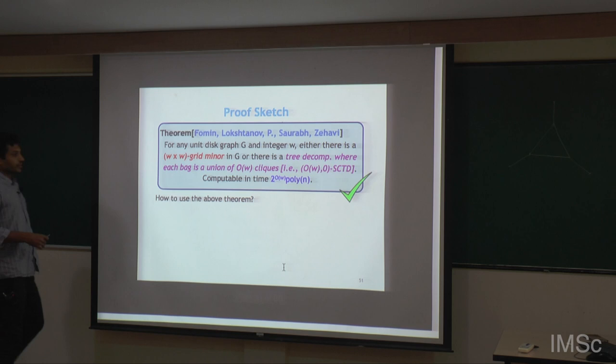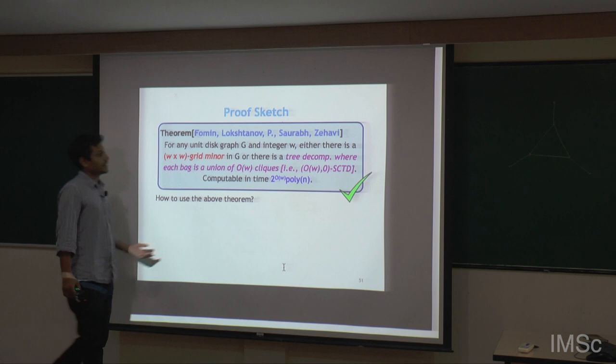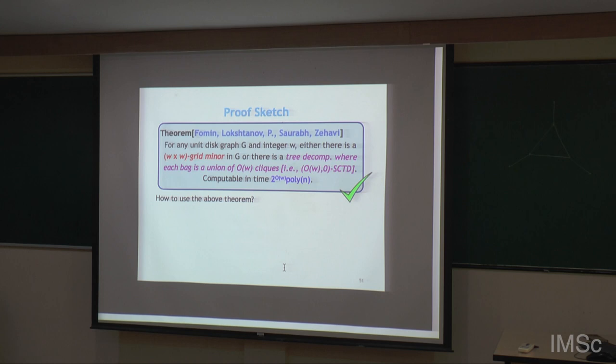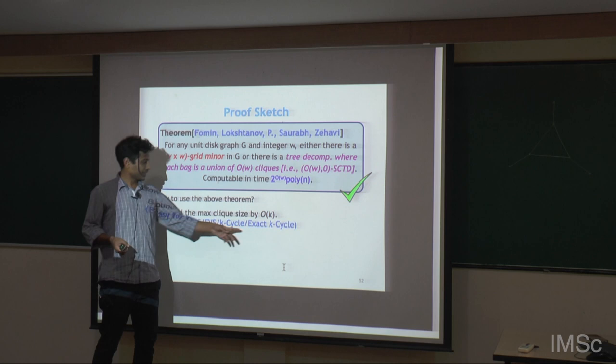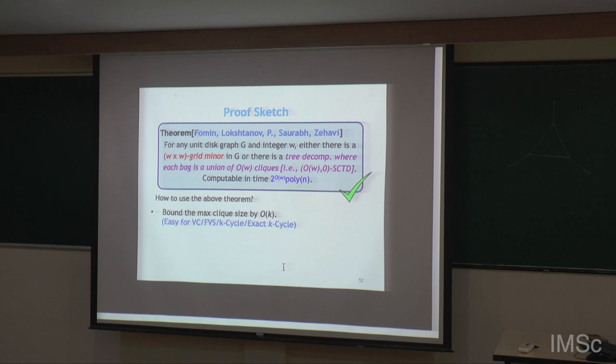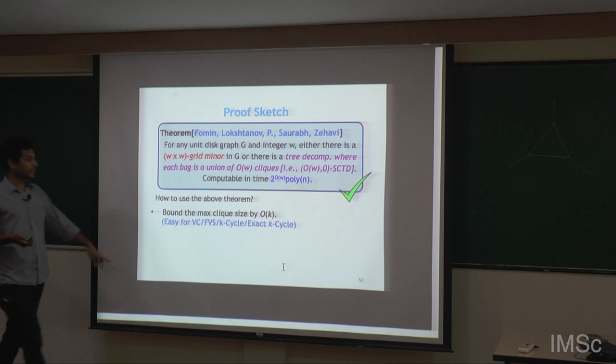How to use this theorem? We have a tree decomposition where every bag contains a few cliques. If we can bound the clique size, then for vertex cover and feedback vertex set — if there is a clique of size more than K, we can immediately say yes or no. For exact K-cycle, we want to test whether there is a cycle of length exactly K.